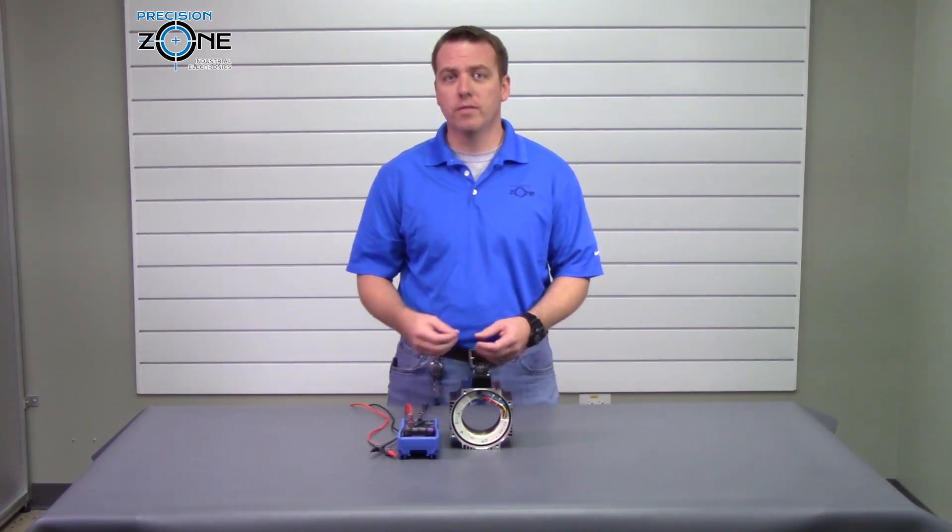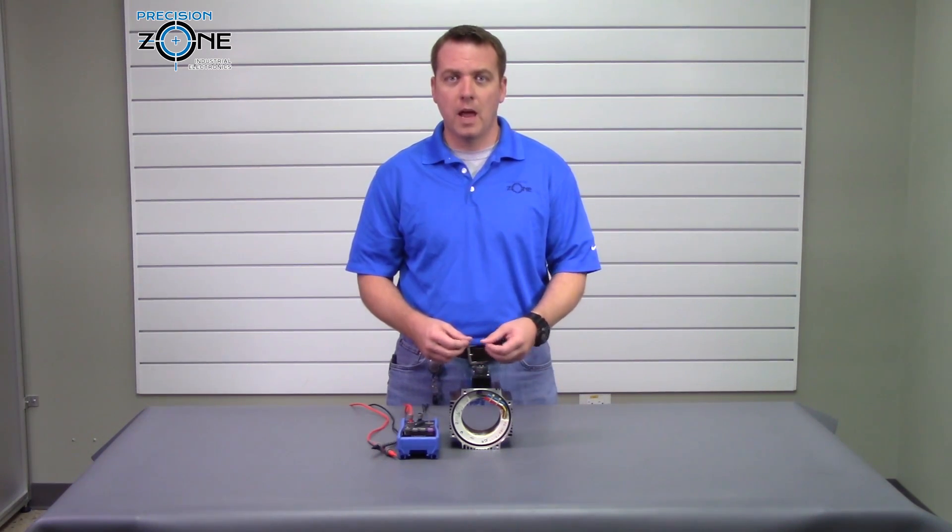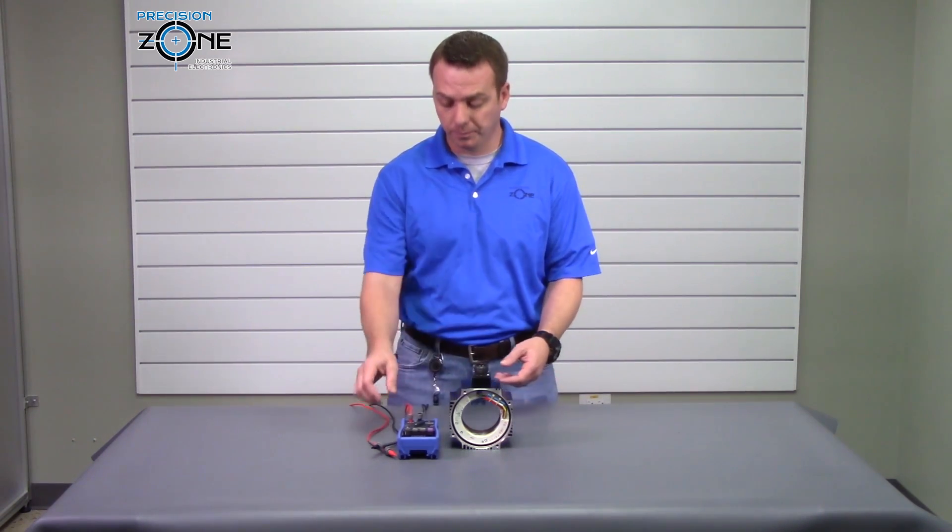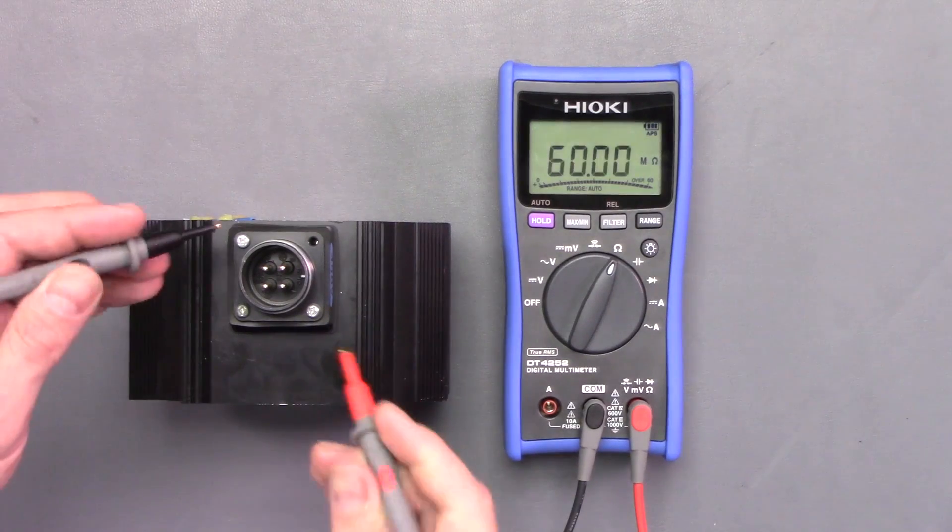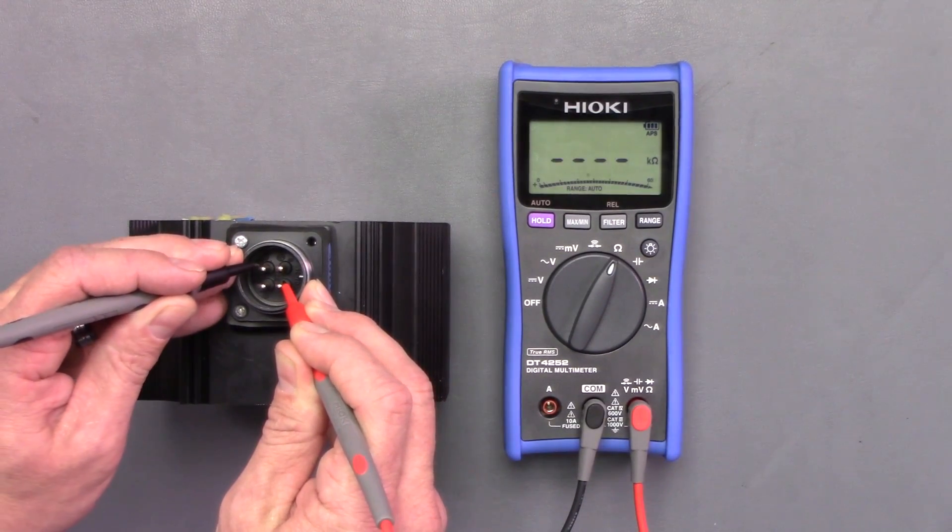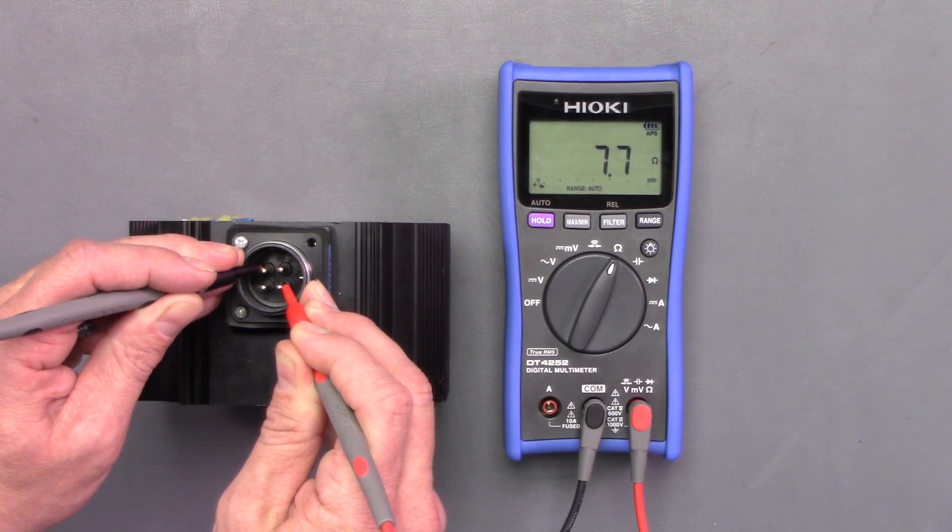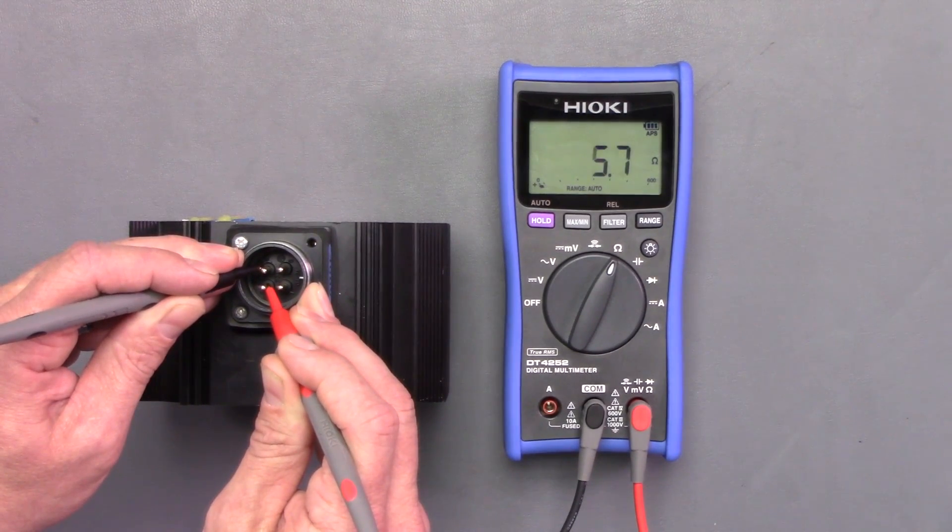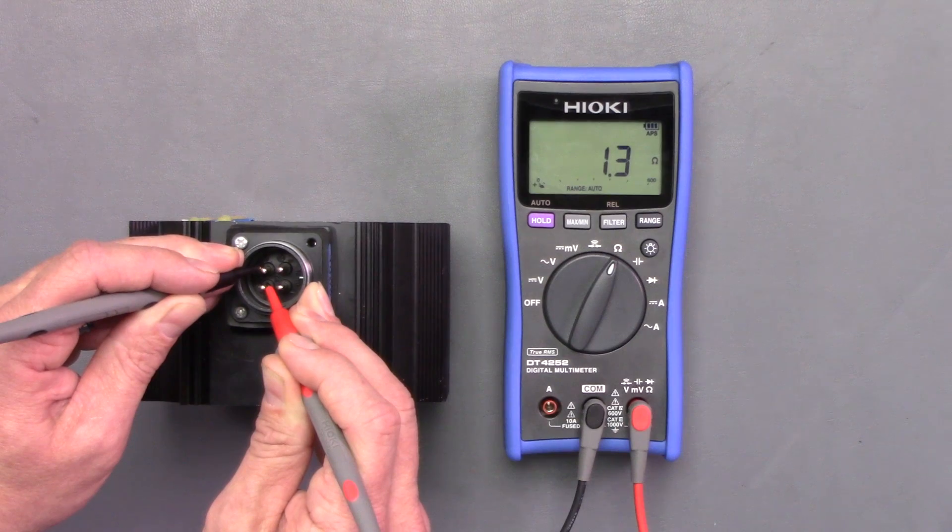Now we're going to go between phases and take readings and they shouldn't vary by any more than 10 percent. I go U to V, 7.4, U to W, 7.9, and V to W, 1.3.